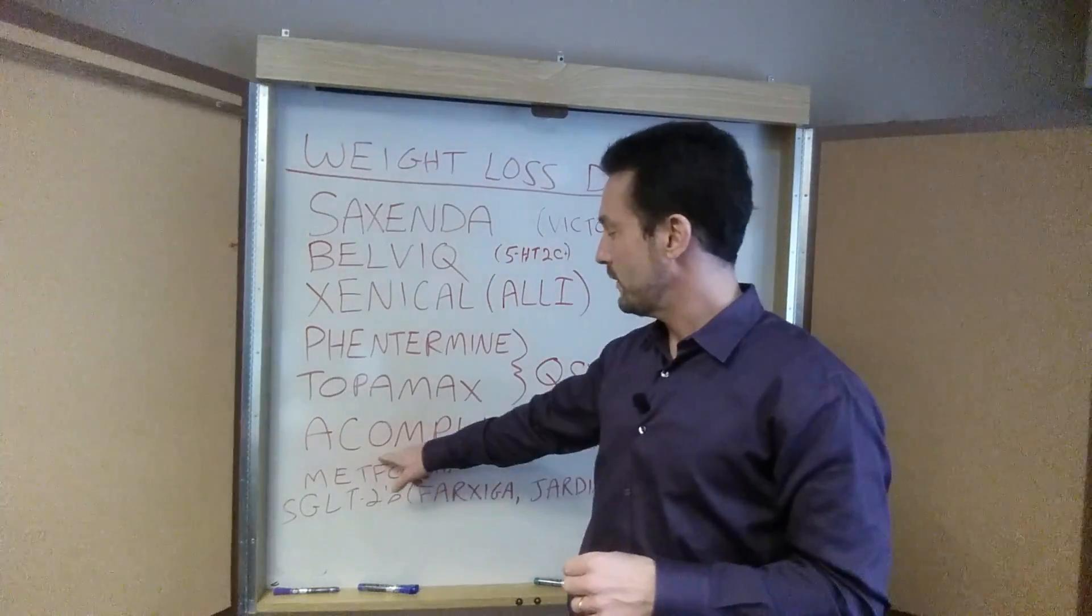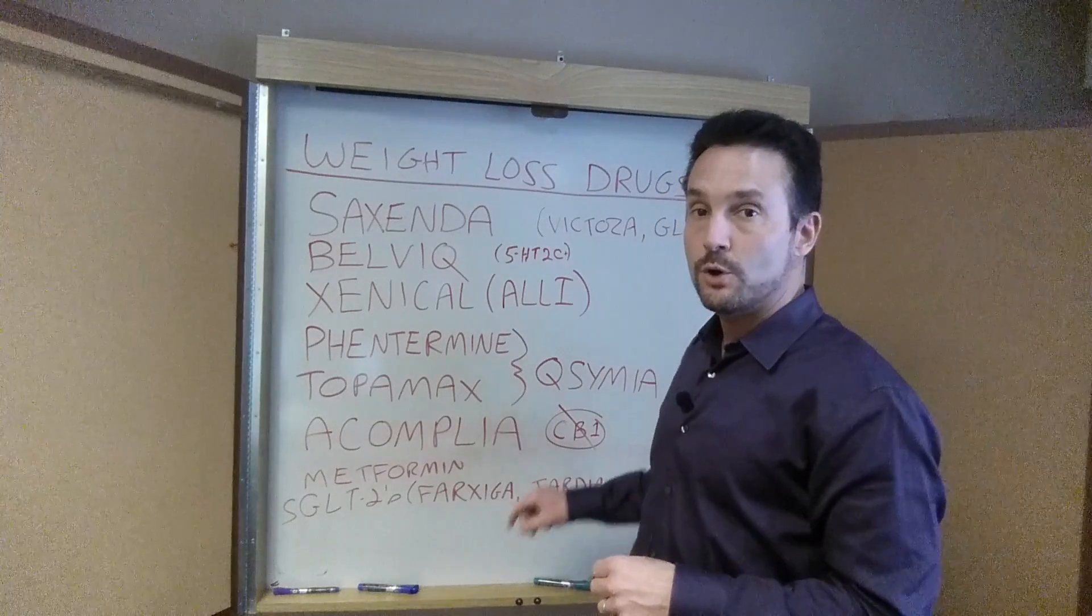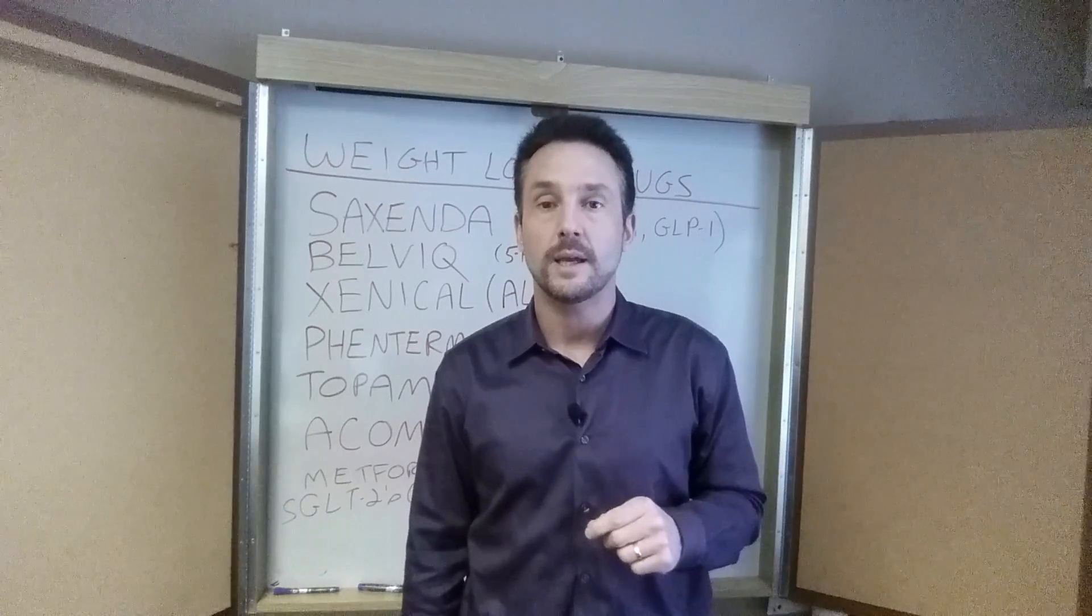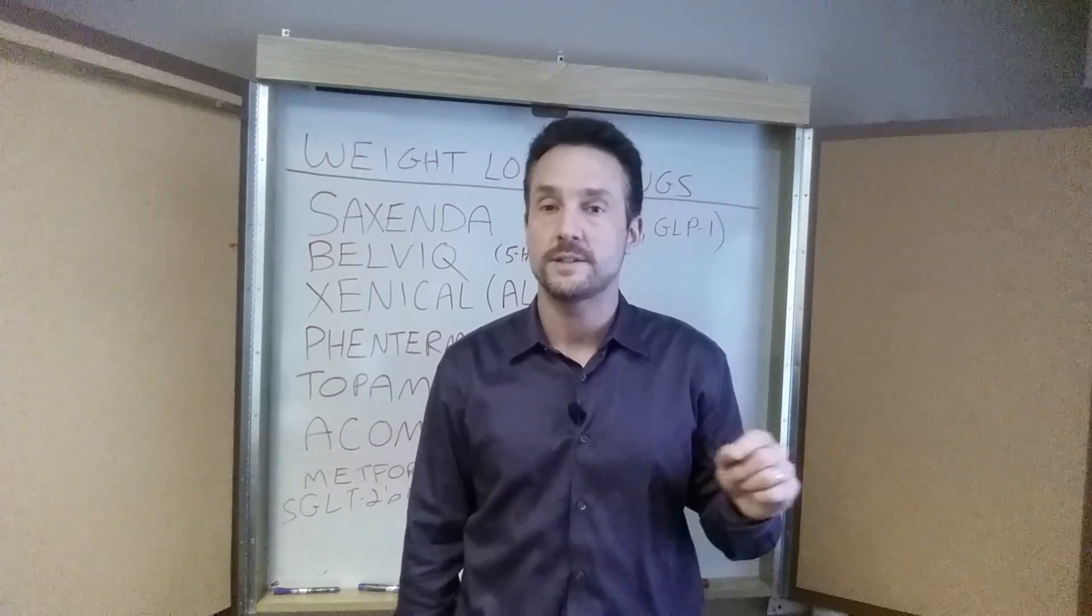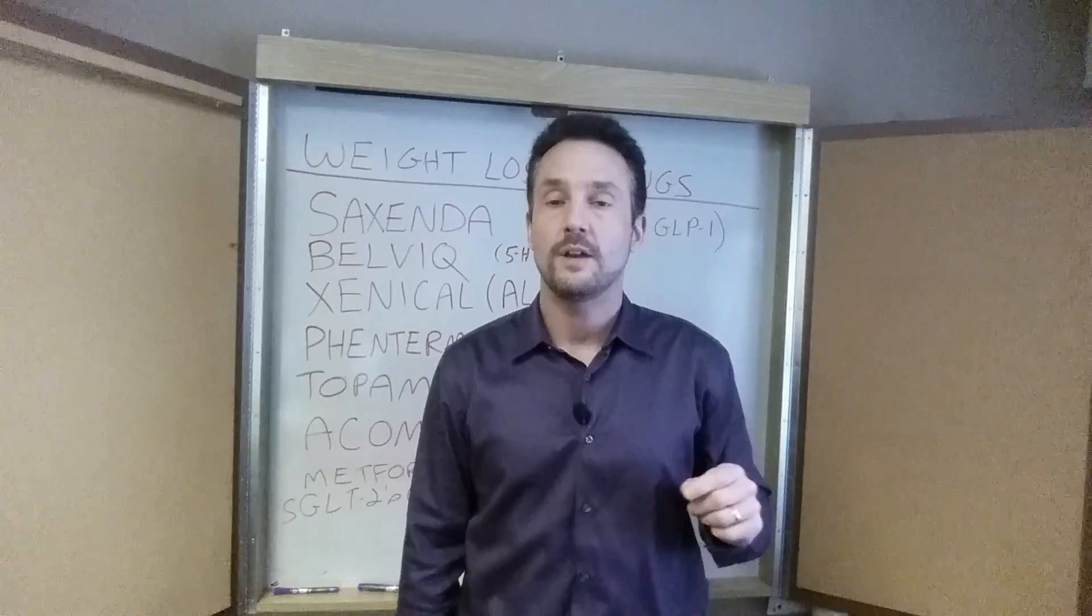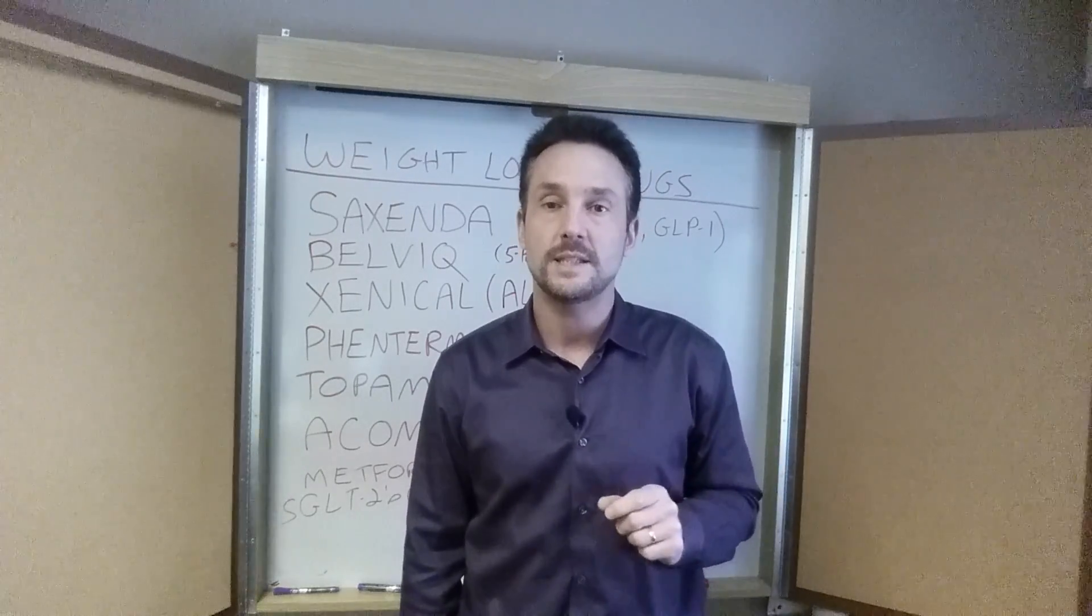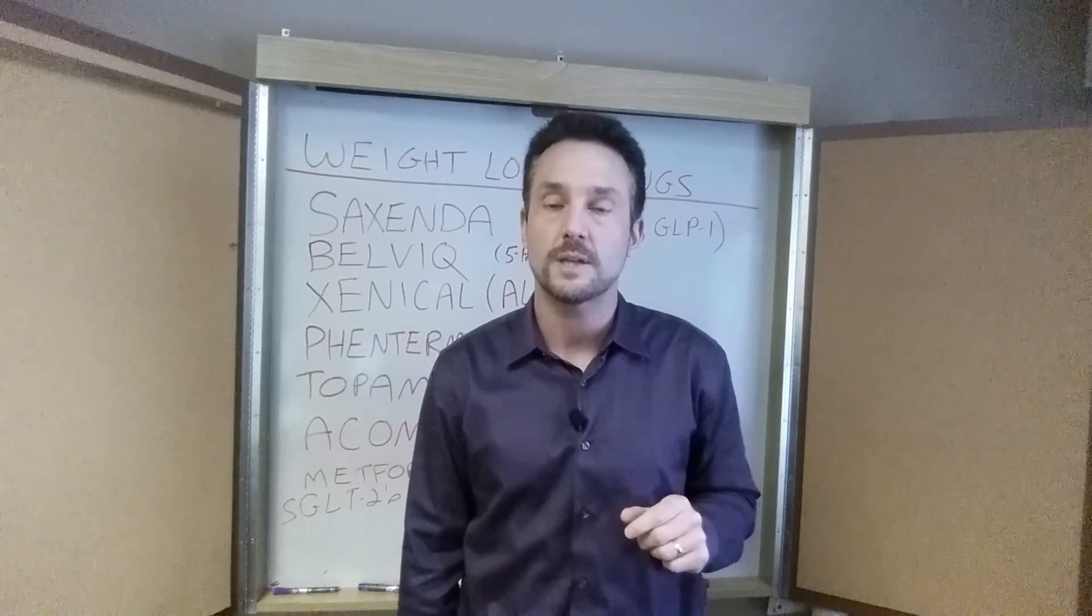One last prescription drug called Accomplia. It is a cannabinoid type 1 receptor blocker, so it is the opposite of marijuana, and it is established that marijuana stimulates appetite and hunger. In fact, we give cannabinoids to people that have wasting diseases like AIDS or cancer to stimulate their appetite.